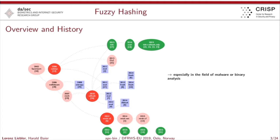There have been plenty of publications which try to evaluate the different schemes, formalize them, and we also have special NIST specifications that try to shape the application and usefulness of those schemes. Application scenarios include binary analysis and malware analysis. There is plenty of research where fuzzy hashing schemes are discussed for the task of matching two binaries, or for classification tasks in malware analysis.